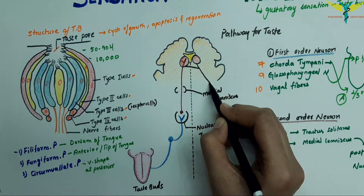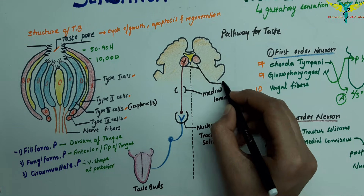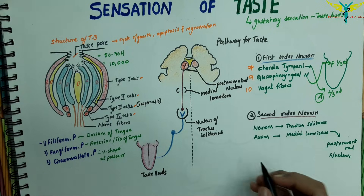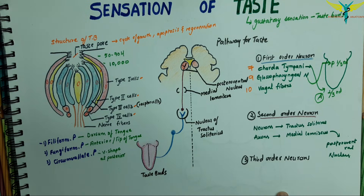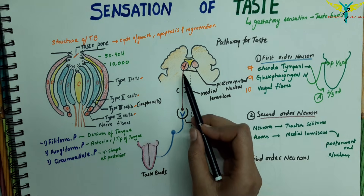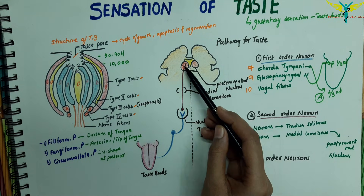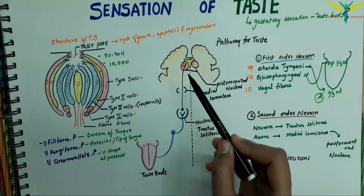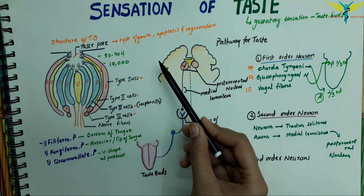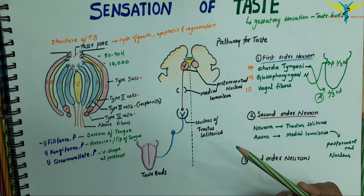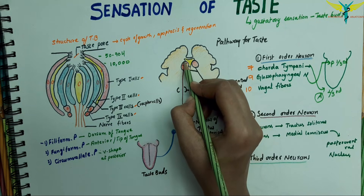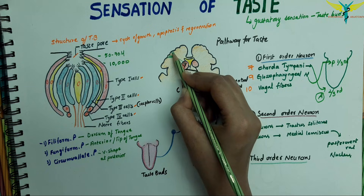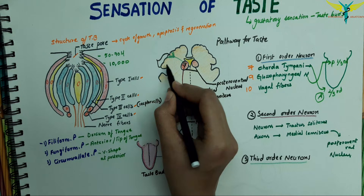These are the posterior ventral nuclei of the thalamus. The third-order neurons are present in the posterior ventral nucleus of the thalamus, and their axons project into the parietal lobe of the cerebral cortex — the parietal cortex — where conscious taste perception occurs.